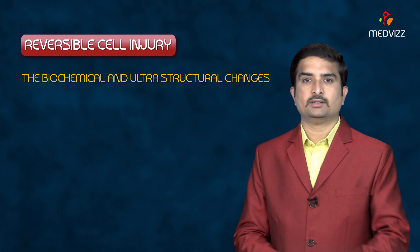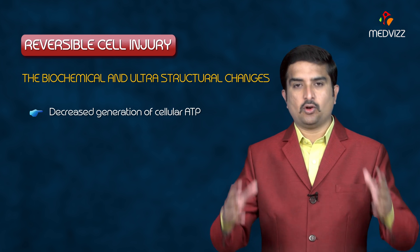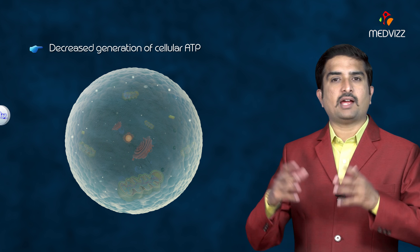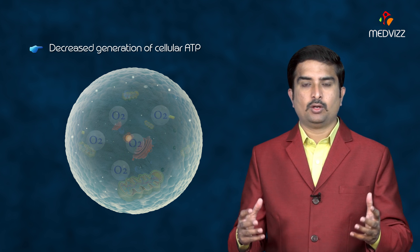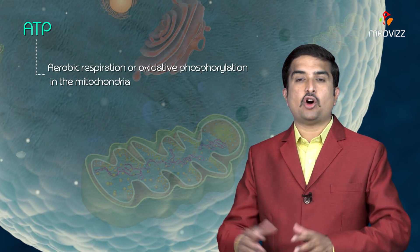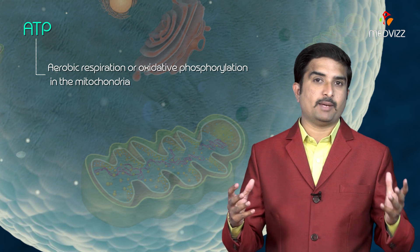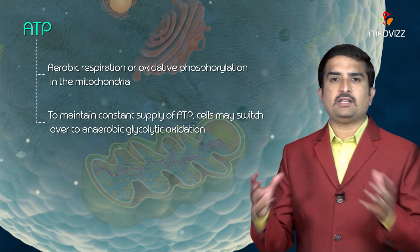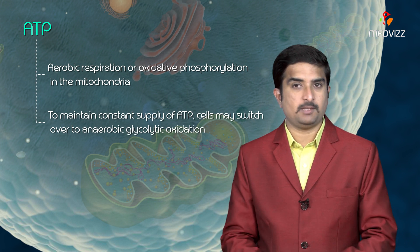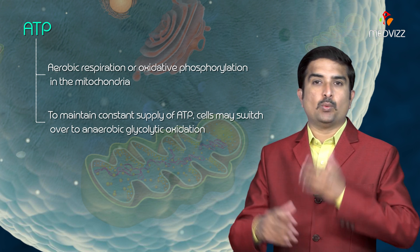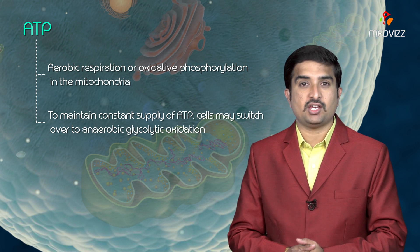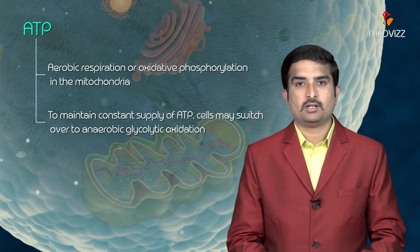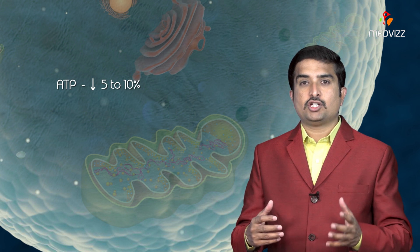The first event is decreased generation of cellular ATP. Living cells require a continuous supply of oxygen for the synthesis of ATP, which is derived from aerobic respiration or oxidative phosphorylation in the mitochondria. To maintain a constant supply of ATP, cells may switch over to anaerobic glycolytic oxidation, especially in ischemic conditions.